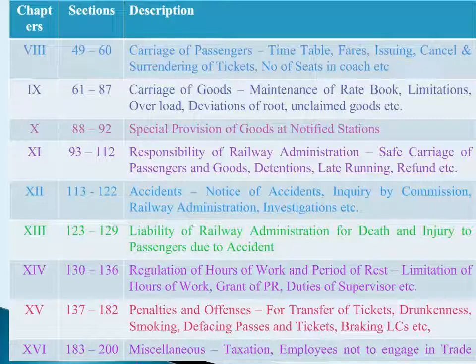Chapter 10: Special Provisions for Goods at Notified Stations has five sections, Sections 88 to 92. In this, unremoved goods at notified stations, etc. are mentioned.